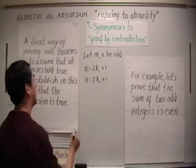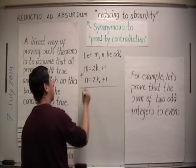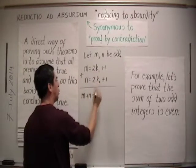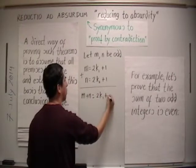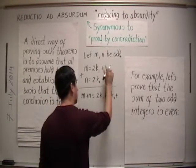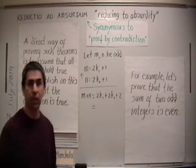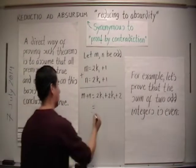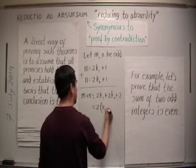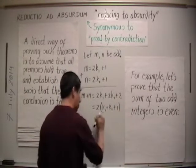We want their sum. So let's add them up. m plus n is 2k₁ plus 2k₂ plus 1 plus 1, which equals 2 times (k₁ plus k₂ plus 1), which is even.